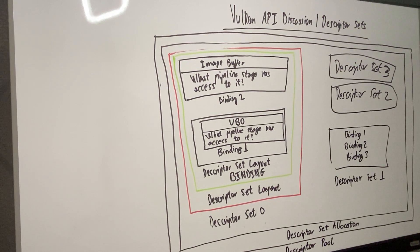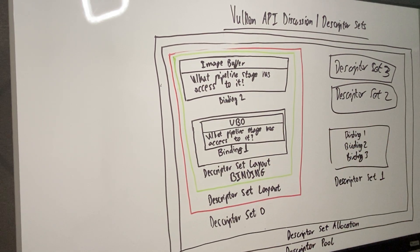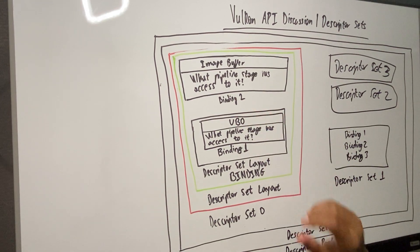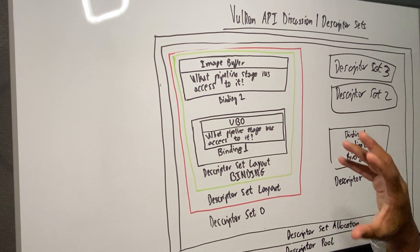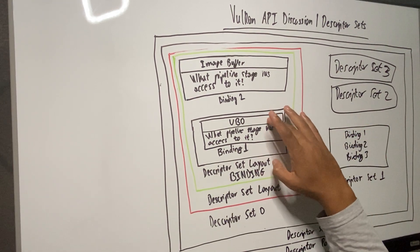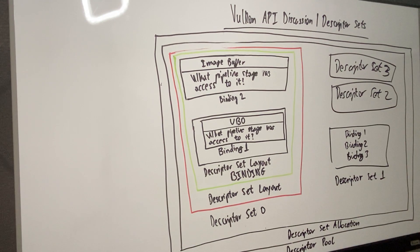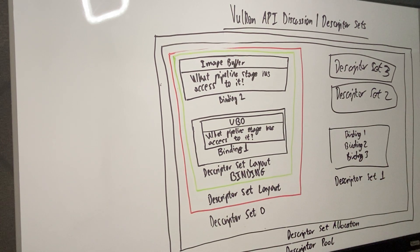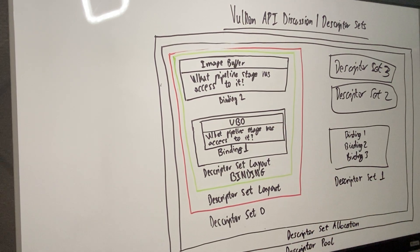The UBO might be changing on a per-frame basis. UBOs are designed to be very small and it's usually read-only memory. You update it on the CPU side and then the GPU and Vulkan grab it and render it on the screen. This whole system is designed to help Vulkan access the UBO very fast and get stuff rendered on the screen quickly, and it can be updated and changed quickly as well.